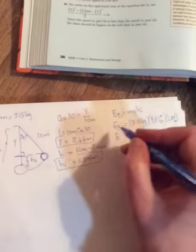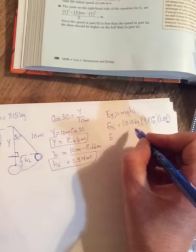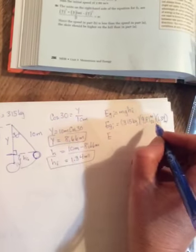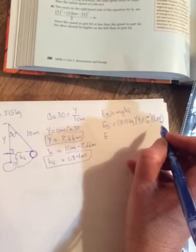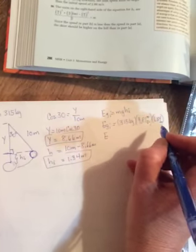So we had already found the height it reached. We were about to multiply 315 by 9.81 times the 1.34.